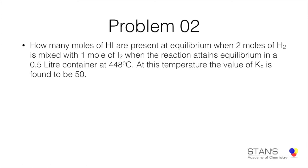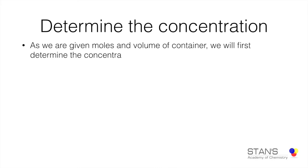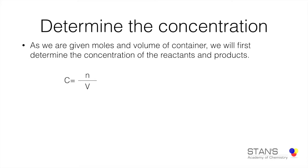The first thing to do is to determine the concentration. We are not given the molarity — we are given the number of moles of the reactants and the volume of the container. The equation to determine concentration is C = N/V, where N represents moles and V represents volume. The concentration of hydrogen is 2.0 moles divided by 0.5 liters, which is 4 M — that is, 4 moles per liter.